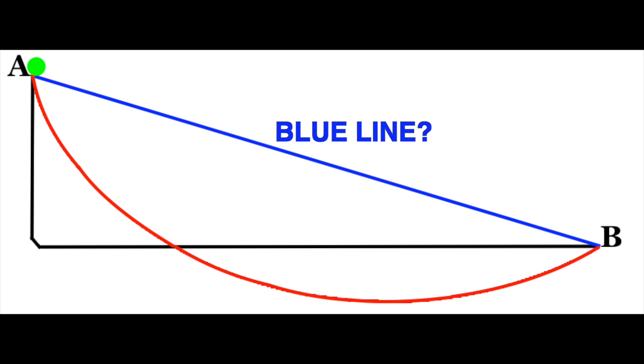The second, let's call it the red line, and it's a curve. And the third is, let's call it the black line, and the black line simply goes vertically down to the ground, and from the ground then it will roll horizontally to B.